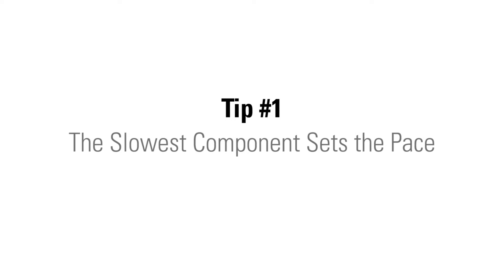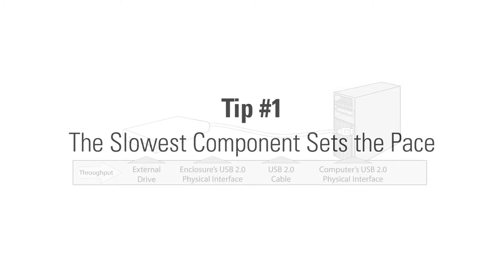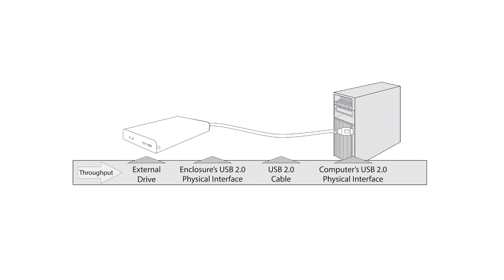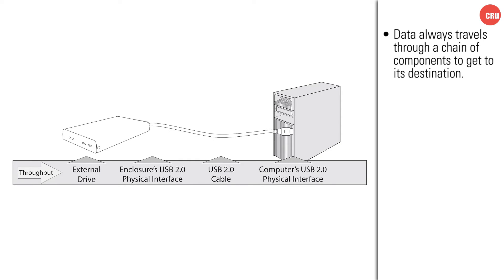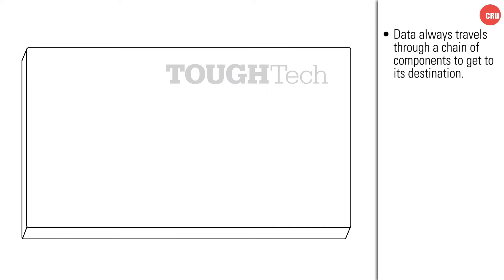When you transfer data, there is always going to be a chain of components that your data must pass through in order to get to its intended destination. This chain starts with the media where your data is stored and ends at the computer or workstation that it's plugged into. So let's look at a specific example.